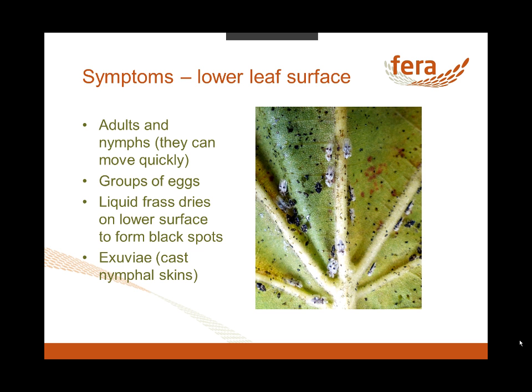In heavy infestations you can have very high concentrations of these black spots, so the top of the leaf is almost white because of the chlorosis, and underneath the leaf you get lots of these black spots, which is very characteristic. You may also see the cast skins of the nymphs, which are black — again very characteristic. So if you do find lace bugs on oak and on platanus, it's highly likely to be one of these non-native North American species.